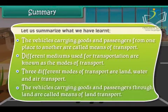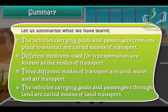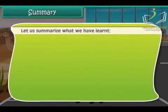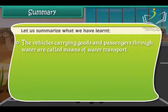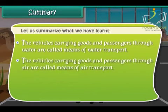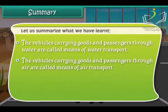The vehicles carrying goods and passengers through land are called means of land transport. The vehicles carrying goods and passengers through water are called means of water transport. The vehicles carrying goods and passengers through air are called means of air transport.